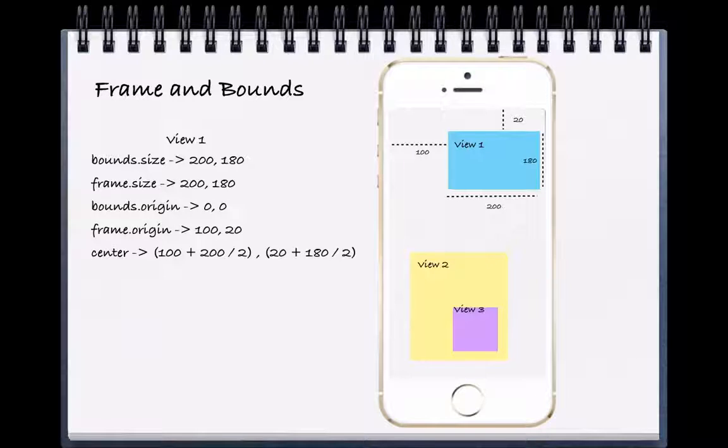The bound and the frame properties are simply CGRECs. That is, they are structs that contain both an origin and a size. Both origin and size are CG points, and this is how you define a rectangle in space.